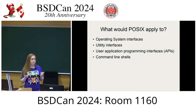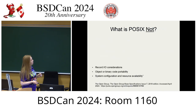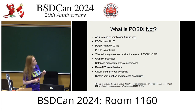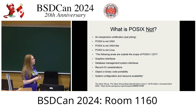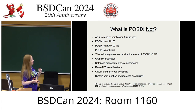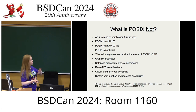POSIX would apply to operating system interfaces, utility interfaces, user application programming interfaces (APIs), and command line shells. What is POSIX not? It's not an inexpensive certification, and POSIX is not Unix — that's a common assumption, but they're not the same. It's also not Unix-like, and it is not Linux. Outside the scope of POSIX: graphics interfaces, database management system interfaces, record I/O, object or binary code portability, and system configuration and resource availability.